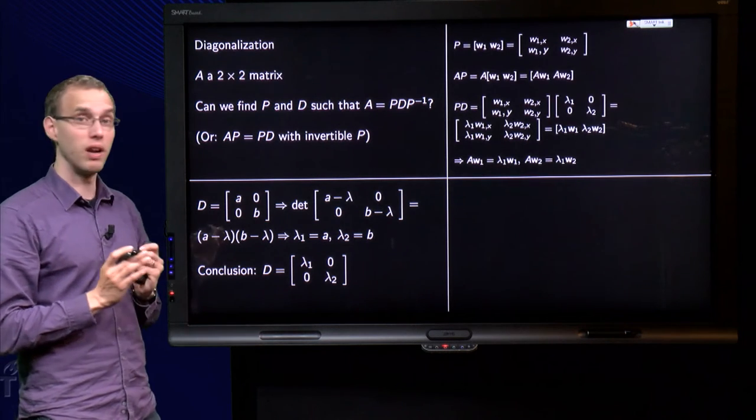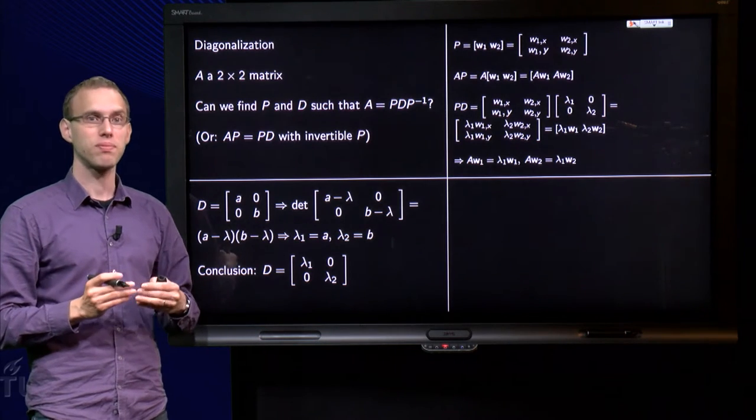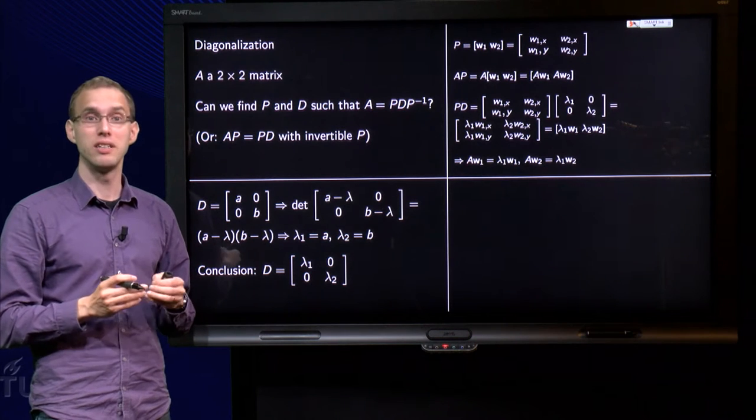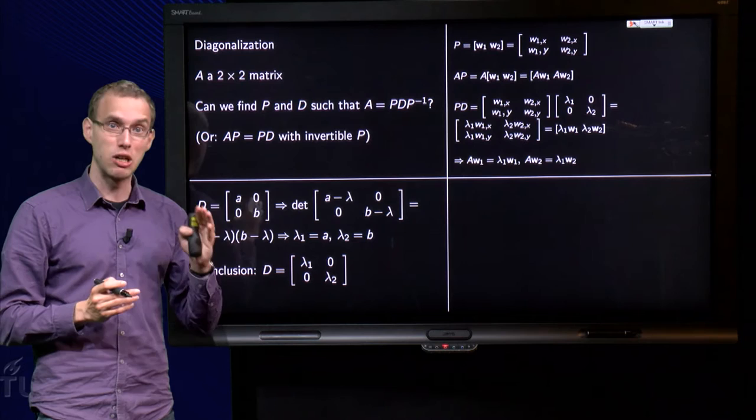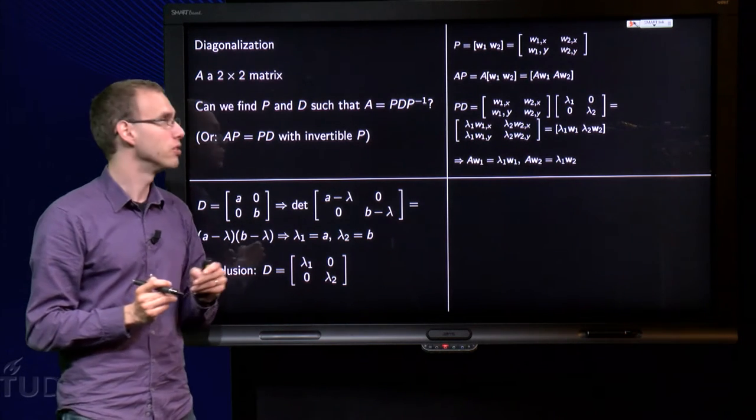Then we are left with the matrix P. How on earth are we going to find this P? Just by trying as we did before, as you know from the example, that is quite a lot of work. Fortunately it can be done a bit easier, as you will see here.